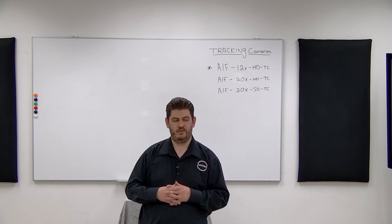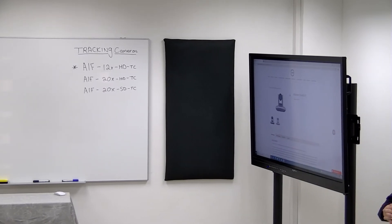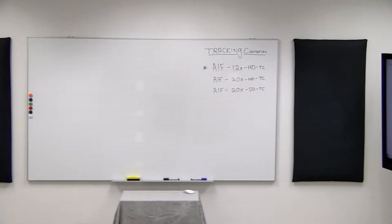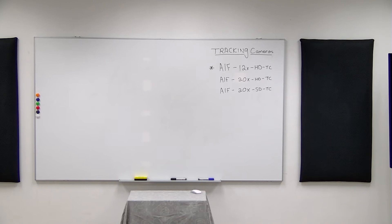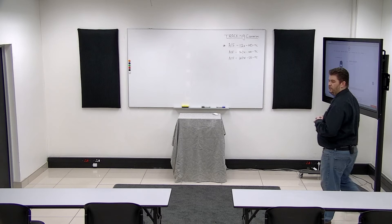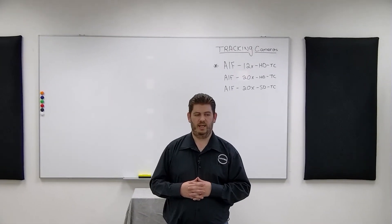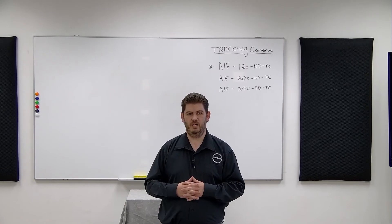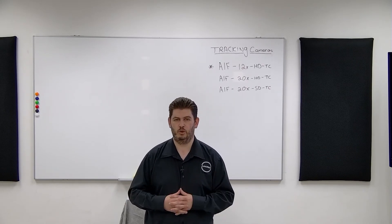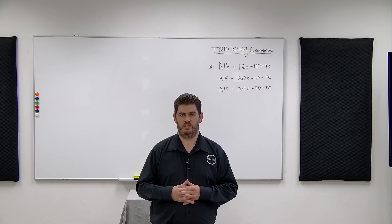I'm going to walk out of frame for a second and stand off to the side. As I come out of frame, it takes a few seconds and the camera goes back to the panoramic view. Once I move back into frame in front of the camera, the camera will pick me up again and start tracking me in the center of the room. That's just a short overview of the cameras — we'll move over now to the Alphatron tracking software.